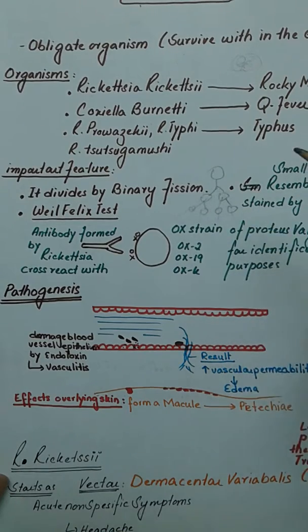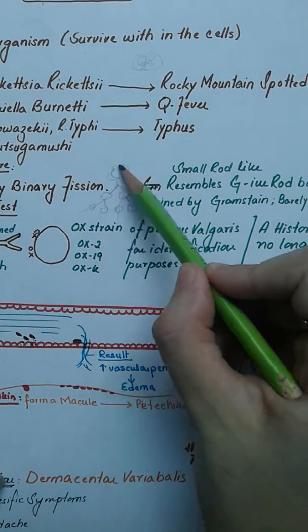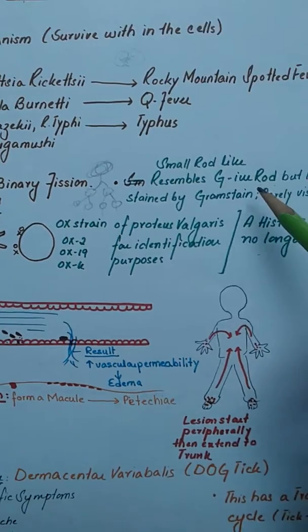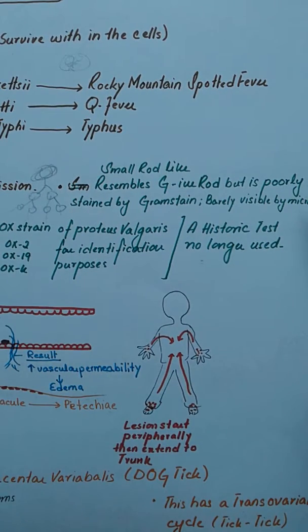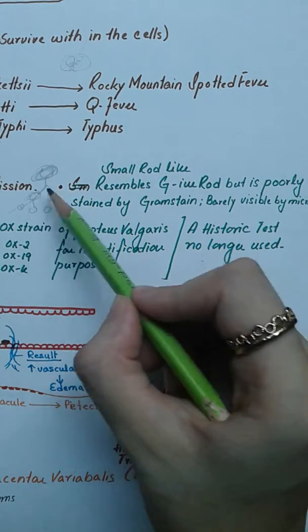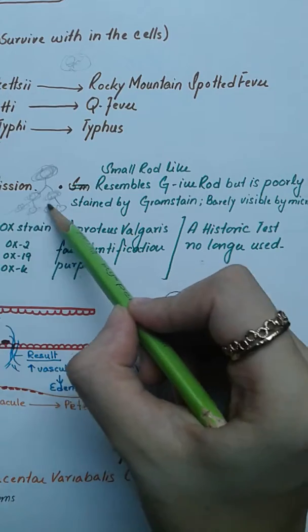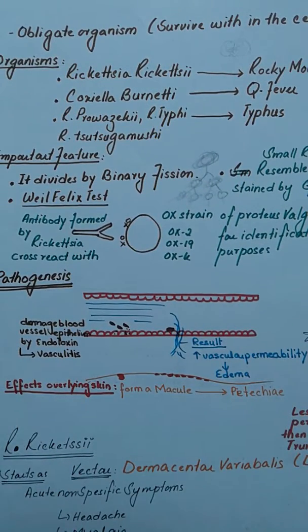This organism is quite small and rod-like. It resembles gram-negative rods but is poorly stained by gram stain, so it is barely visible. You can see it is barely visible—I cannot see it, it's so lightly staining.